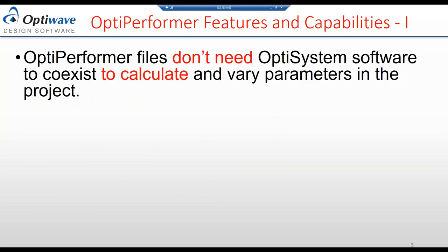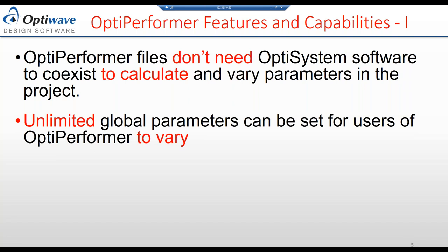Once you install the OptiPerformer tool, we'll show you how to use it and how to create files with OptiSystem to be used by OptiPerformer. Now, moving into features and capabilities: OptiPerformer files do not require OptiSystem to be present to calculate or run them. The parameters you want the user to adjust are set through the global parameters in OptiSystem, and the number of parameters you can allow the OptiPerformer user to control is unlimited.